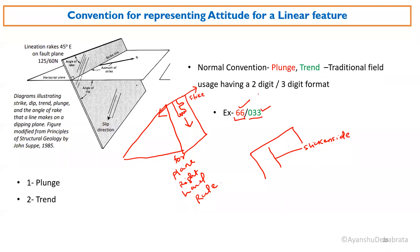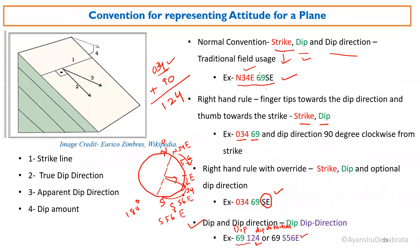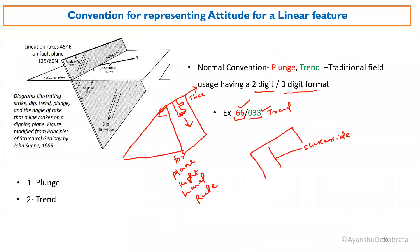Remember: for a linear feature we follow a two-digit slash three-digit format — first the two-digit plunge, then the three-digit trend. But in a planar feature, we first use three digits then two digits. So that is the difference: in a planar feature the strike is three digits first, whereas in a linear feature the three-digit trend comes last.